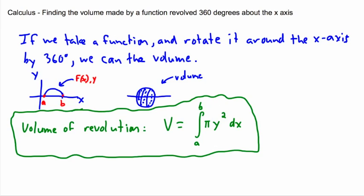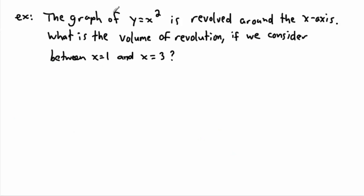So let's take a look at an example. So here we have the graph of y equals x squared and it's revolved around the x-axis. We're going to assume it's completely around. What's the volume of revolution if we consider between x equals 1 and x equals 3? Now what I could do, I could actually try to sketch it from x equals 1 to x equals 3 and this is going to be hard to do the 3D version, but the 2D is easy. So this is y equals x squared. That's what that graph looks like.